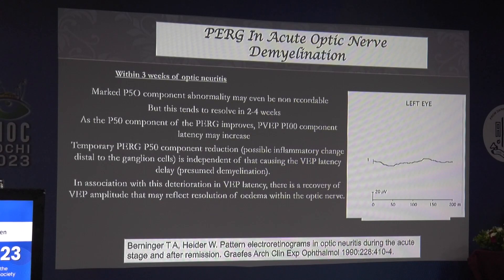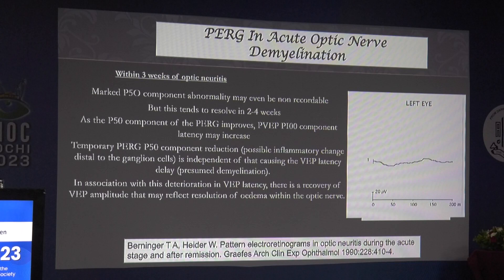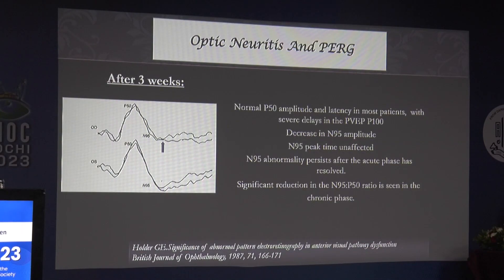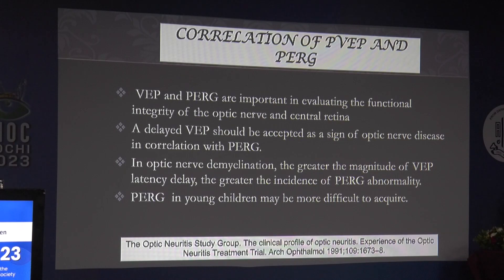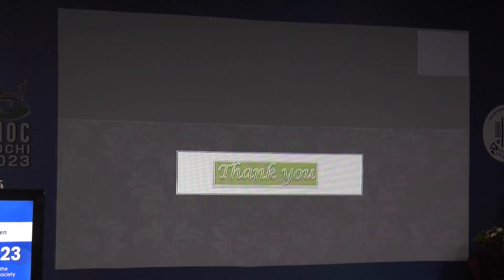In optic neuritis, pattern ERG may be unrecordable in the initial three weeks when visual acuity is very low. As vision improves, P50 returns but N95 does not recover — confirming optic nerve disease. Pattern VEP must always be correlated with pattern ERG to make a reasonable diagnosis of optic nerve disease.